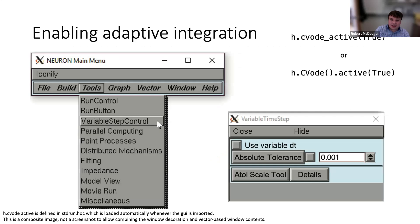The nice thing inside NEURON is this is a freebie. You go to the Tools menu in the graphical interface, select Variable Step Control, and up pops a dialogue box.